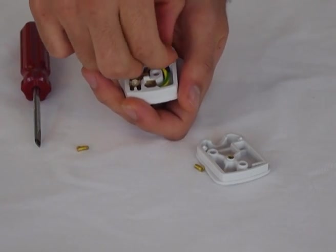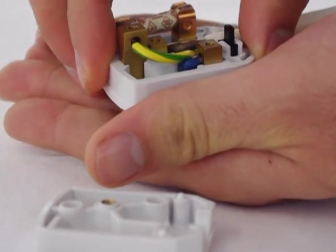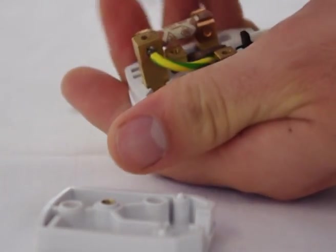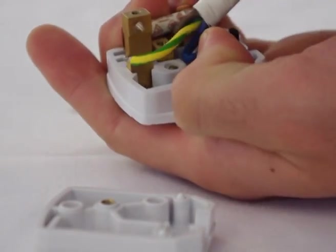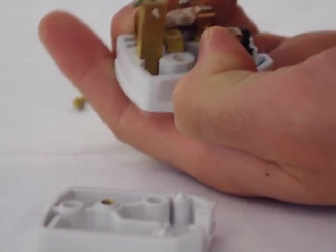Now once that's done, to remove the wires what you want to do is push the three pins upwards. That will make getting the wires out a bit easier as the holes are more accessible. There you go. Now once all of those are removed then you're just left with the plug.